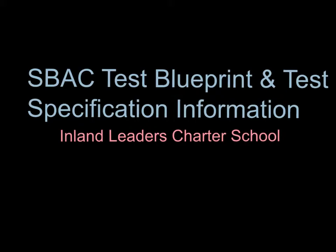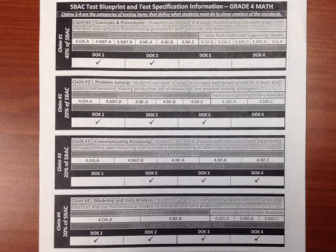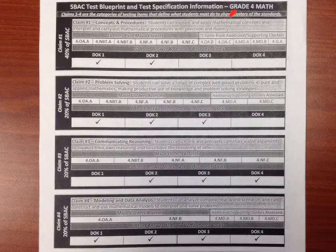Welcome to an instructional video on how to read the SBAC test blueprint page. This is the paper I am referring to. It was requested during the fraction coherence training and given to a representative of all grades 3rd through 8th after the training. On one side, you'll notice at the top that it has the grade and subject area. I photocopied them so that math would be on one side and ELA on the other.